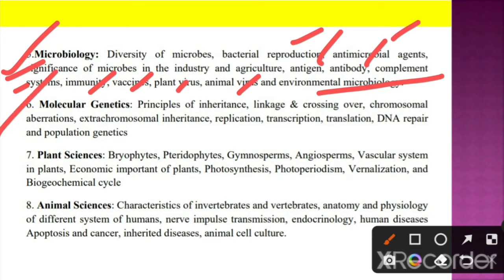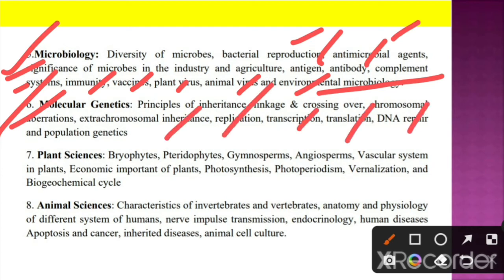Unit 6 is about molecular genetics. Here we have to understand the principles of inheritance, linkage and crossing over, chromosomal aberrations, extrachromosomal inheritance, replication, transcription, translation, DNA repair, and population genetics.